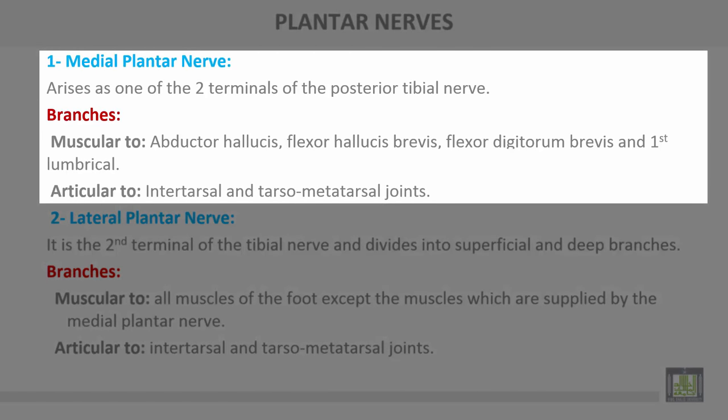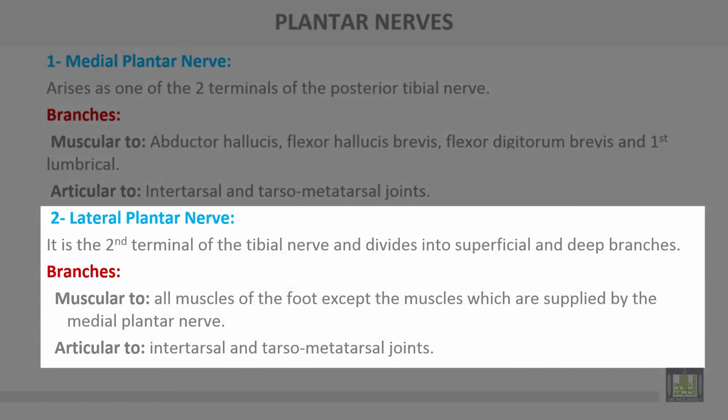The plantar nerves: the medial plantar nerve arises as one of the two terminals of the posterior tibial nerve. It gives muscular branches to abductor hallucis, flexor hallucis brevis, flexor digitorum brevis, and the first lumbrical muscle. Articular branches go to the intertarsal and tarsometatarsal joints. The lateral plantar nerve is the second terminal of the tibial nerve and divides into superficial and deep branches. It supplies muscular branches to all muscles of the foot except those supplied by the medial plantar nerve.